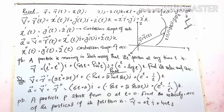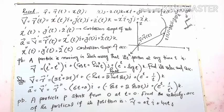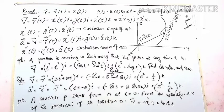The velocity of the particle is the first order derivative of the position vector with respect to t. So v equals r prime of t, which equals x prime(t) i plus y prime(t) j plus z prime(t) k. This gives the velocity of the moving particle.